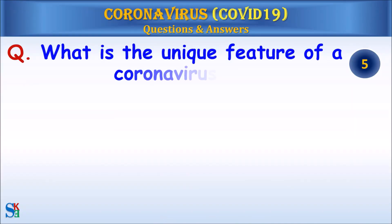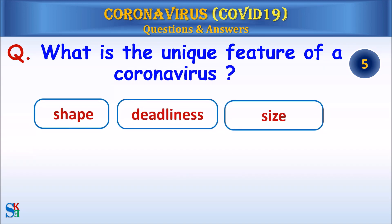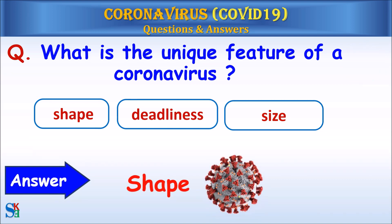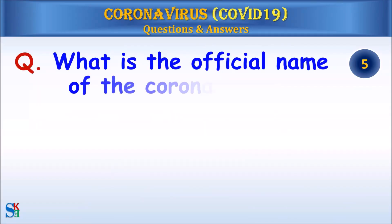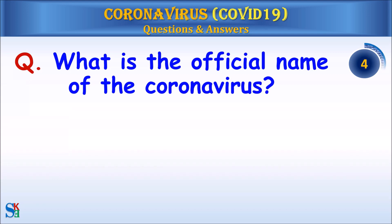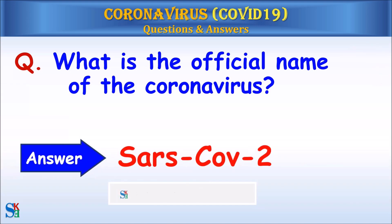Question: What is the unique feature of a coronavirus — shape, deadliness, or size? Answer: Shape. Question: What is the official name of the coronavirus? Answer: SARS-CoV-2.